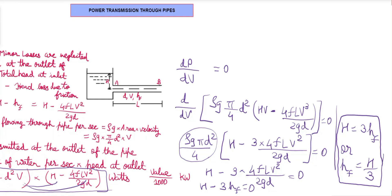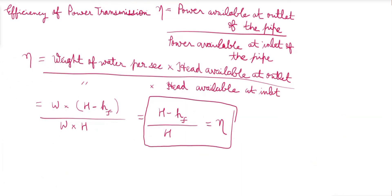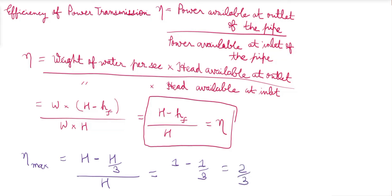This equation is the condition for maximum transmission of power: power transmitted through a pipe is maximum when the loss of head due to friction is one-third of the total head at the inlet, i.e., HF = H/3. Substituting into the efficiency equation, η_max = (H − H/3)/H = 2/3, which is 66.7 percent. This is the maximum efficiency of power transmission.